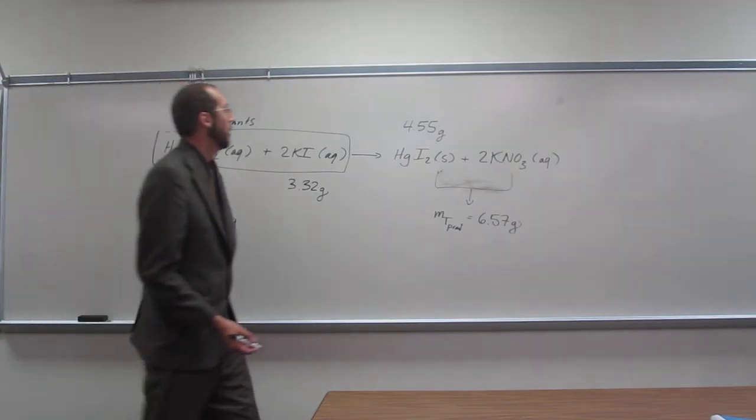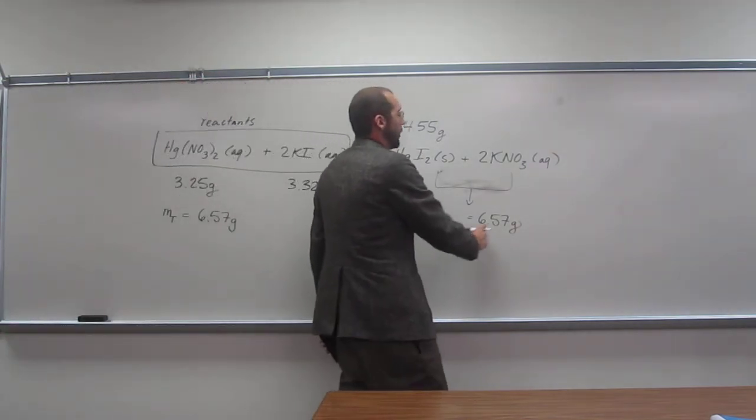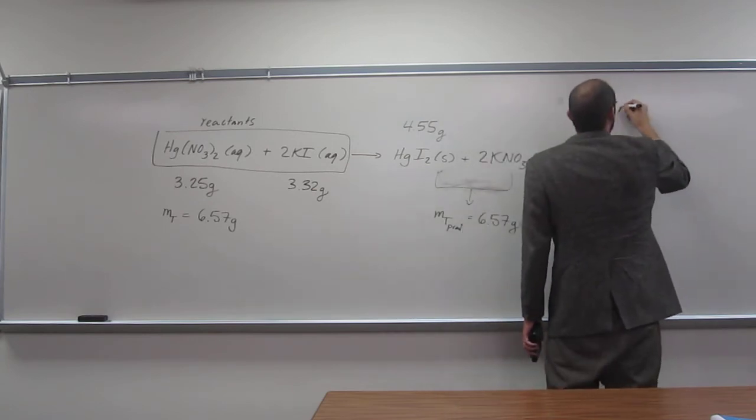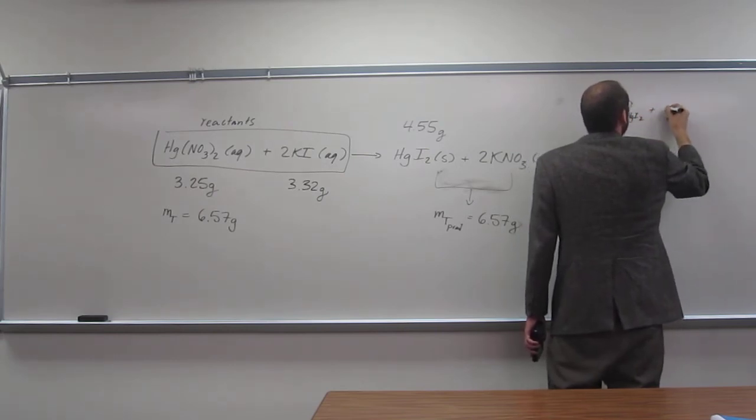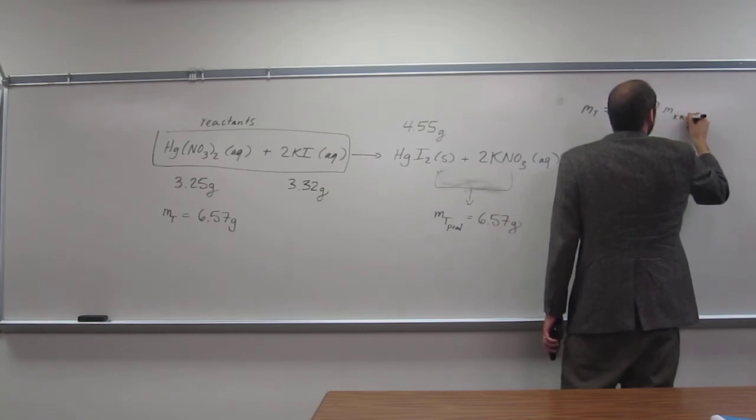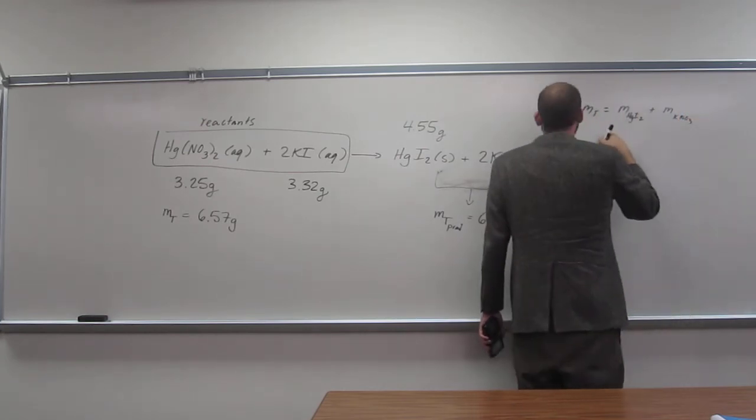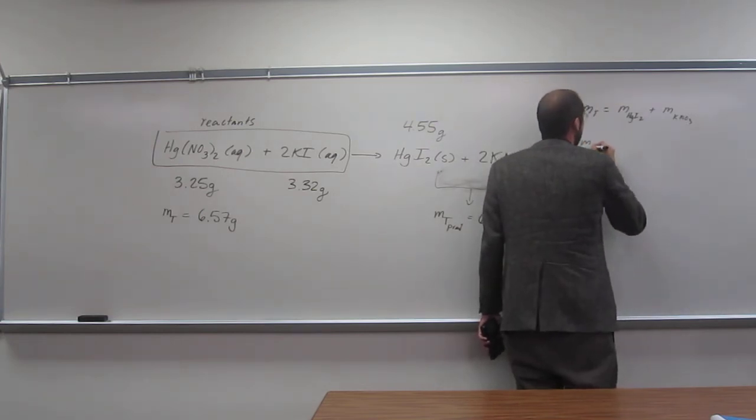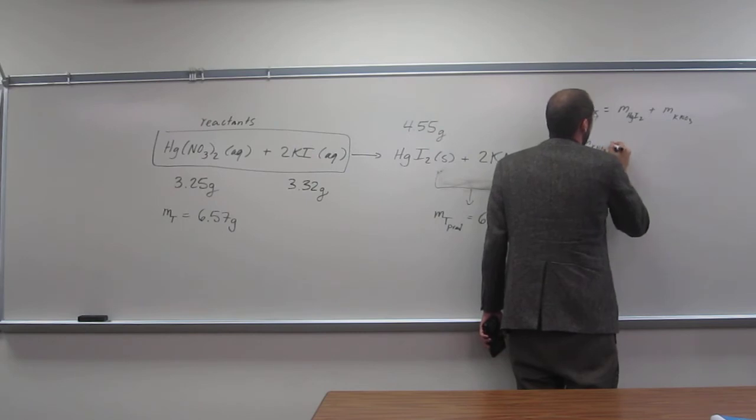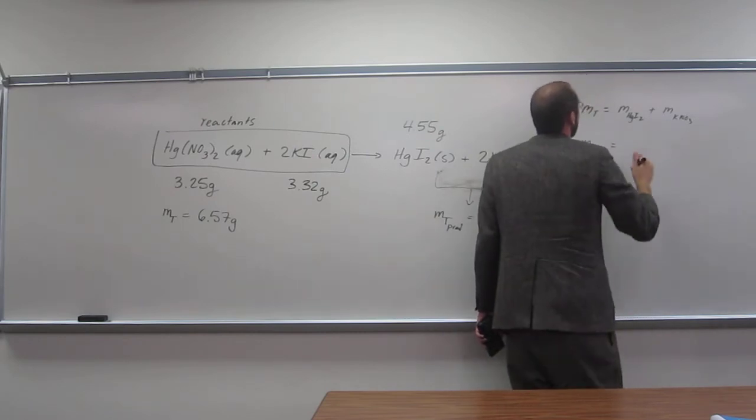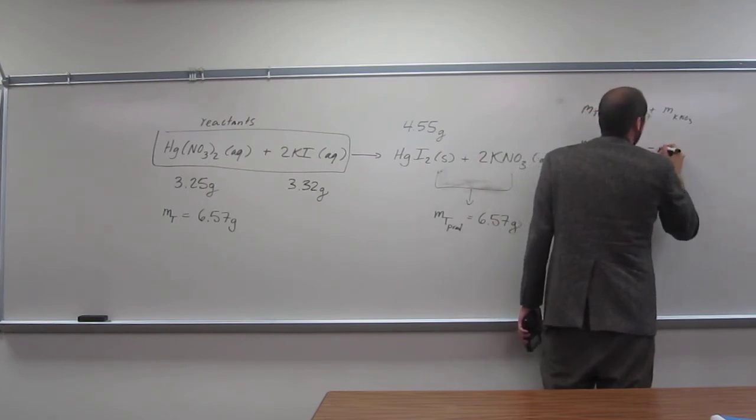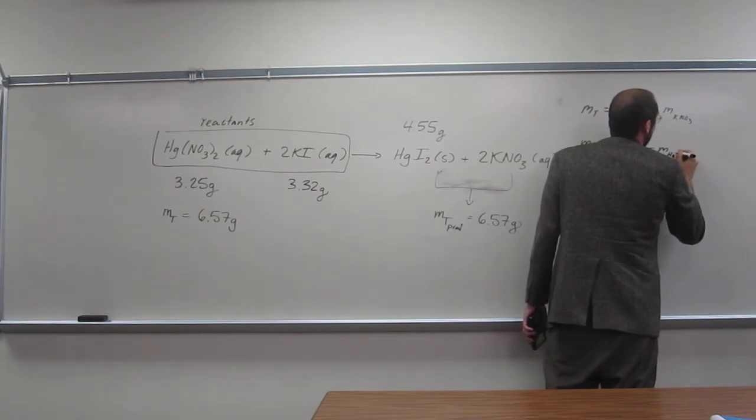Subtraction. Yeah, so we would take the mass total. Let's just write this out. The mass total here is going to be the mass of mercury-2 iodide plus the mass of potassium nitrate. We're looking for the mass of potassium nitrate, so let's rearrange this equation. That's going to equal mass total minus the mass of mercury-2 iodide.